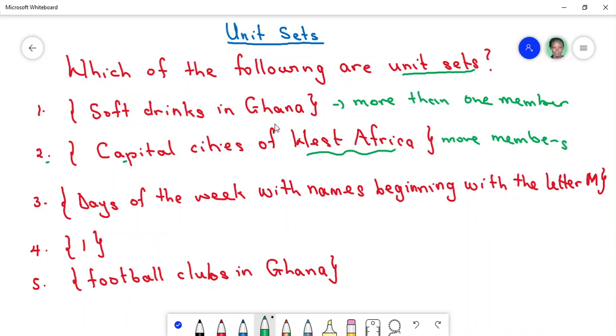Tuesday, Wednesday, Thursday, Friday, Saturday, and Sunday. So you realize that the only member of this set here is Monday, because it is the only day that starts with M. So you realize that this set is a unit set.